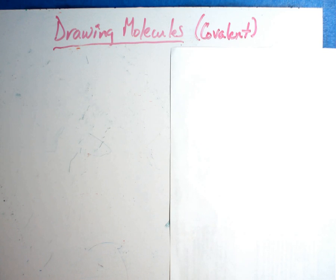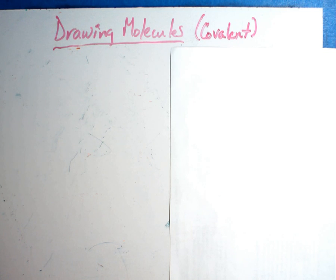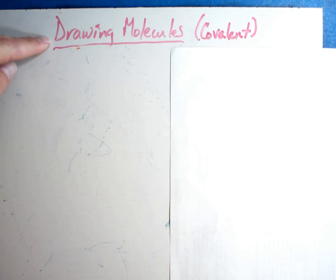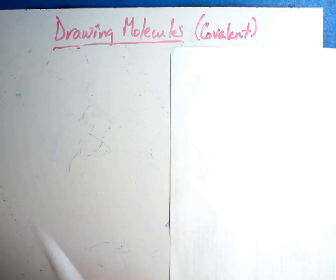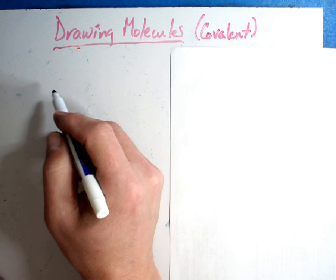In this video, we're going to draw molecules. We're going to go just a little further from what we learned in the last video. We talked about Lewis dot structures. Now I'm going to take a new one and I'm going to teach it to you in two ways. We're going to draw molecules and then I'm going to show you a quicker way - maybe a different way than you learned in class - on how to draw them.